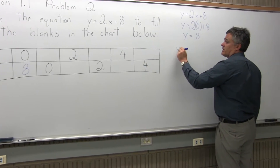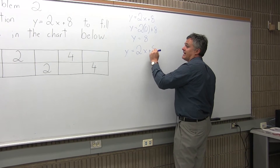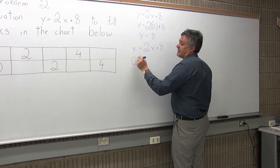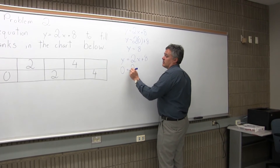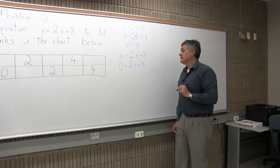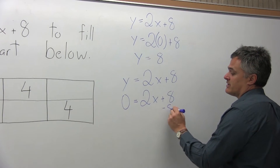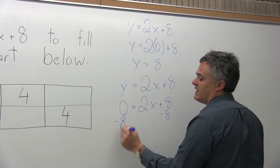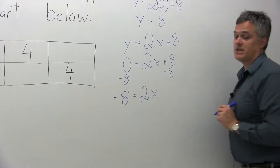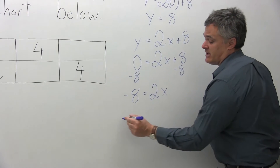Start with the same equation — all the blanks use y equals 2x plus 8. Now y equals 0, so 0 equals 2x plus 8. We need to solve for x. Get the 8 on the other side by subtracting 8 from both sides, giving negative 8 equals 2x.